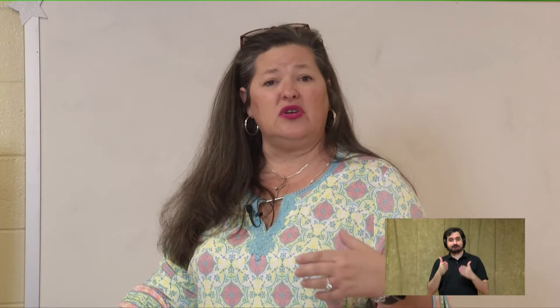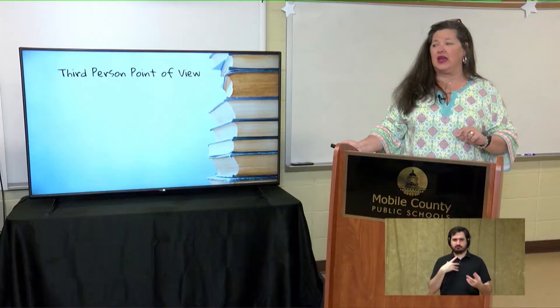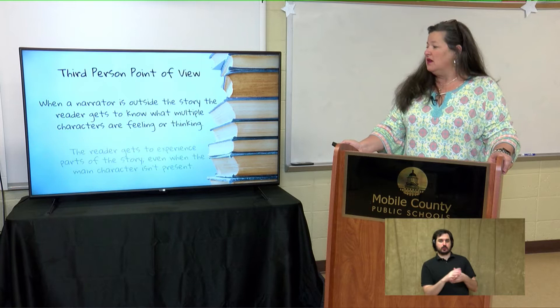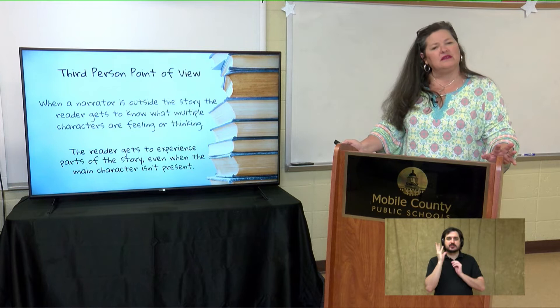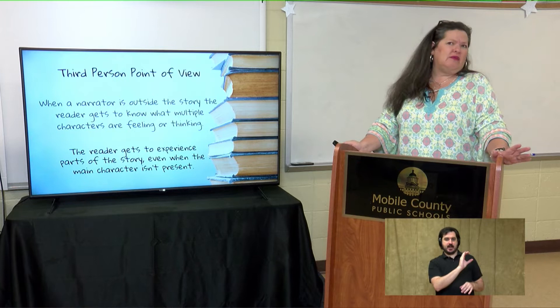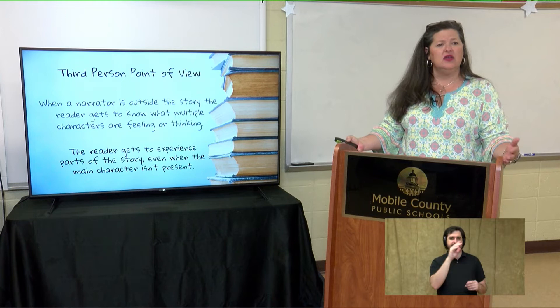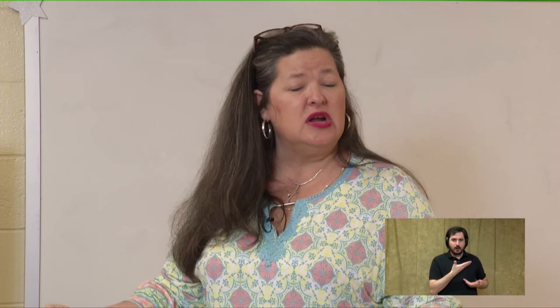If I'm upset, I'm going to tell it in a bad way. If I'm happy, I'll tell it in a good way. If you're just observing, you don't know those emotions — you tell it from what you saw. We call that third person point of view — when a narrator is outside of the story and the reader gets to know what multiple characters are feeling or thinking, even when the main character isn't present. Like in Harry Potter, at the very beginning Harry was a baby — he couldn't tell us what was going on. So we learned about it from other characters' points of view.